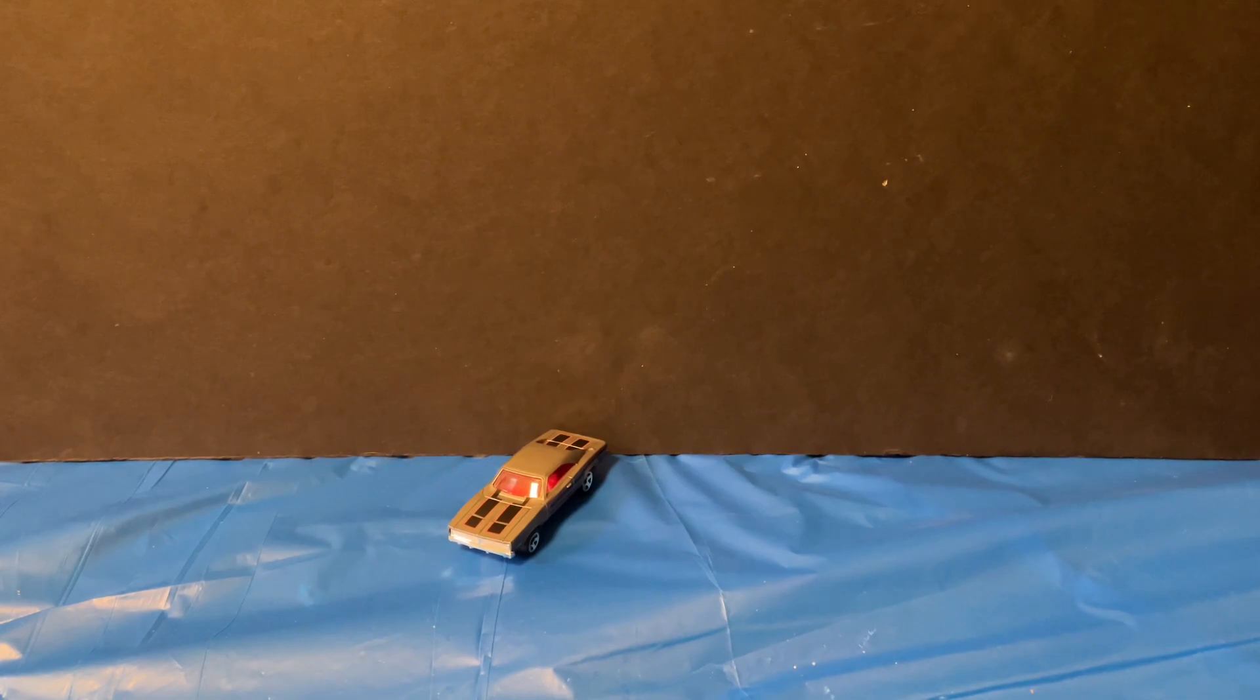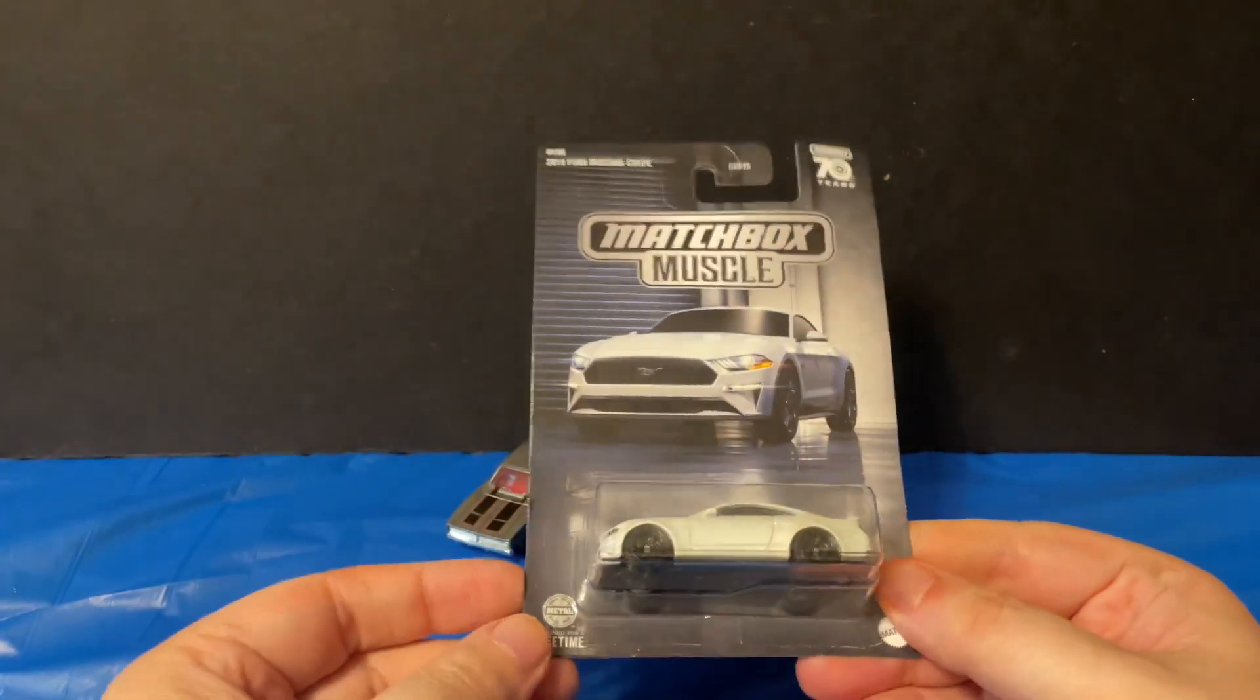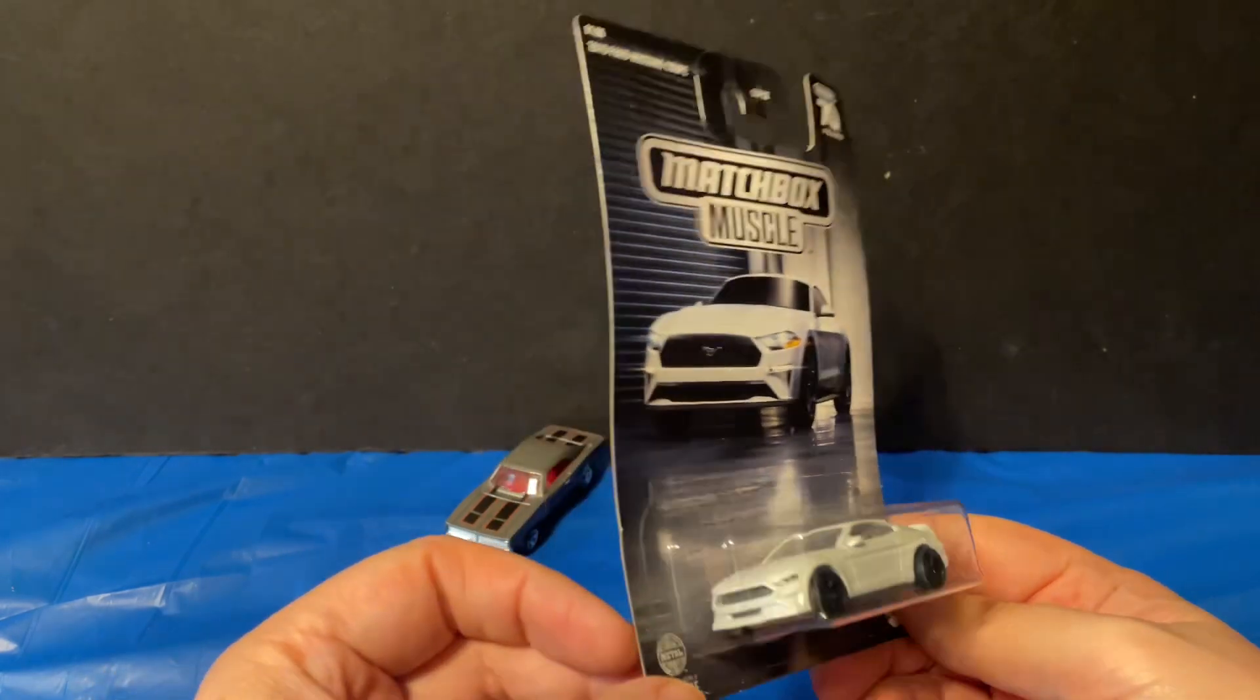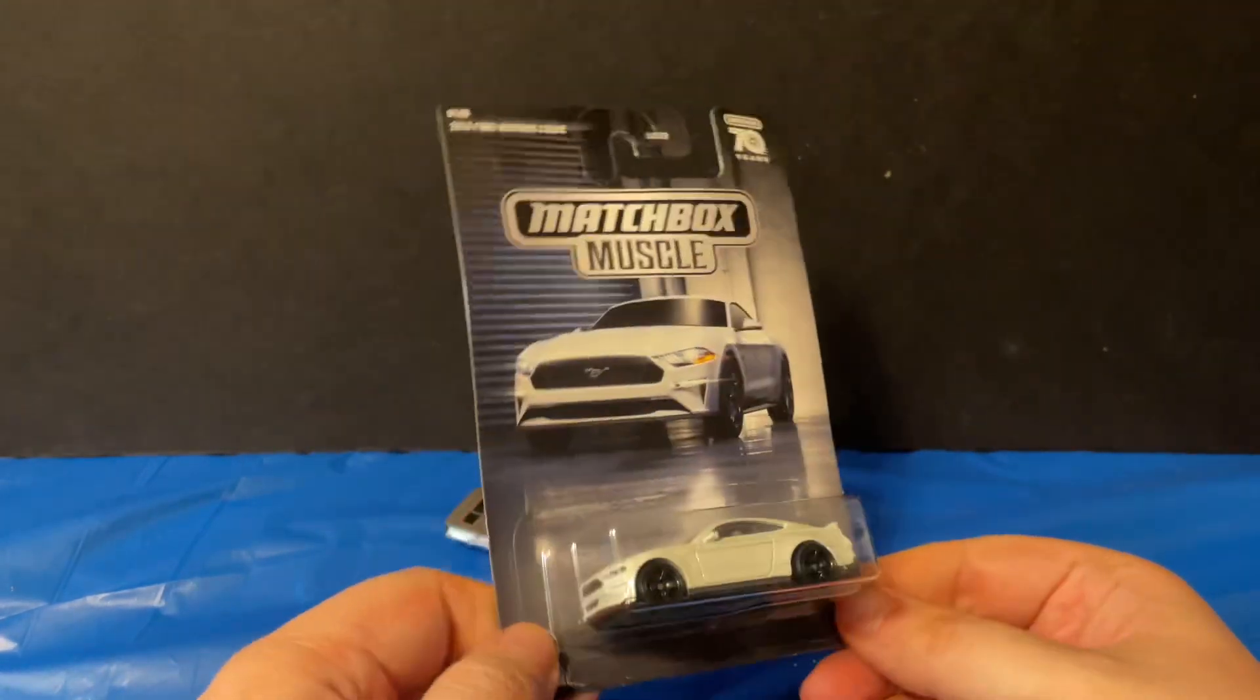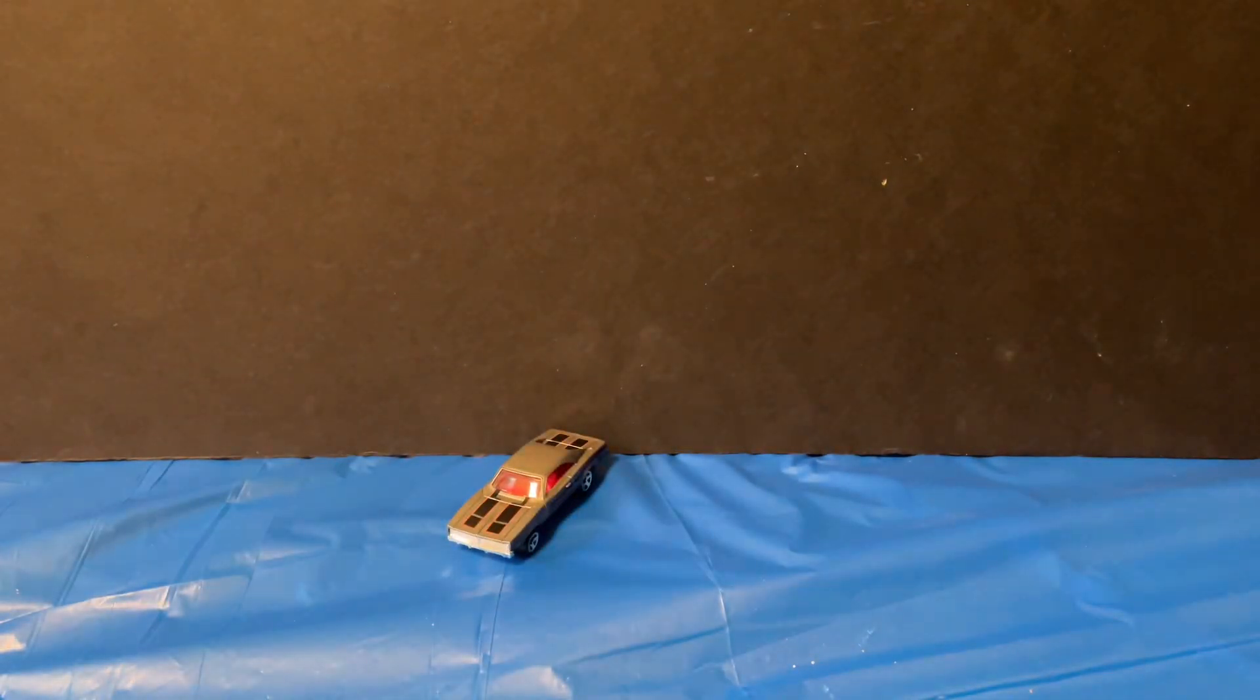So the first one we got here is a Ford Mustang. This is a 2019 Ford Mustang Coupe. It looks like a factory stock model for a muscle car. So let's take it out of the package and take a look at it.